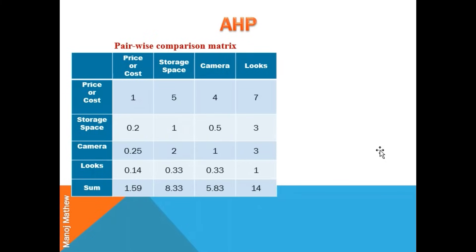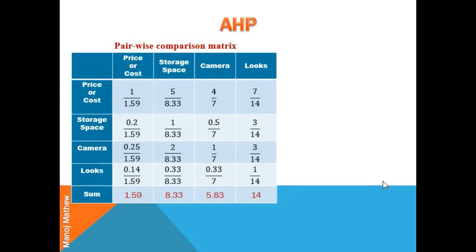The fractional values have been converted to decimal values and the sum of each column is calculated — for example, 1 plus 0.2 plus 0.25 plus 0.14 gives 1.59. The normalized pairwise matrix is then calculated by dividing all elements of a column by the column sum. Here, 1 is divided by 1.59, 0.2 is divided by 1.59, and so on.